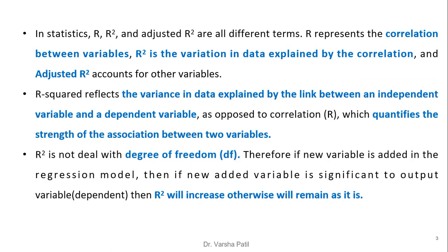In statistics, R, R-square, and adjusted R-square are all three different terms. R represents the correlation between the variables. R-square is a goodness of fit — how the data spreads along the regression line. That is, a variation in data explained by the correlation. Adjusted R-square accounts for the other variables, that is, its related degree of freedom of linear regression and number of independent variables involved in the process, as well as the total number of records present in the training data.